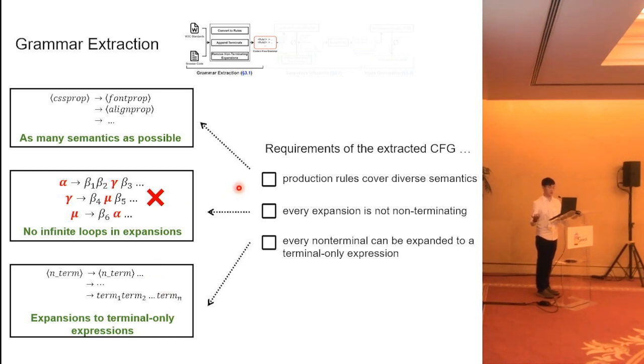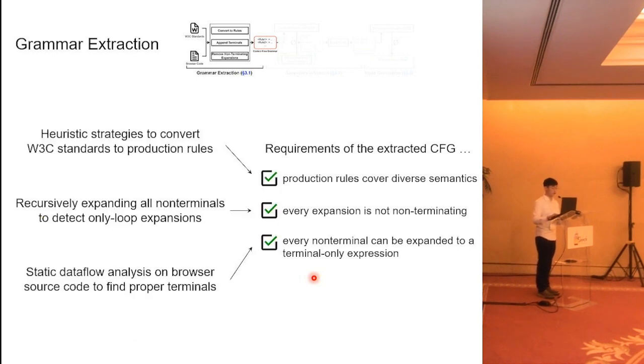It is supposed to satisfy these requirements. First, production rules should cover diverse semantics. That's our research goal. Second, every expansion of non-terminal symbols can be terminated, which means that there is no infinite loops in the expansions of non-terminals. And of course, we also want to generate a test case, which is a pure string. So every non-terminal symbol should be able to be expanded to a terminal-only expression.